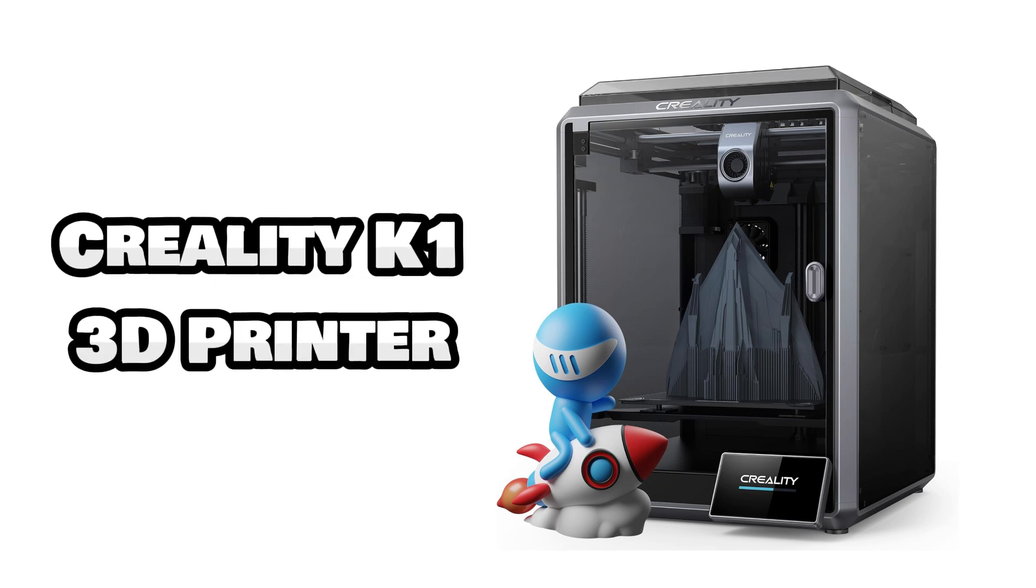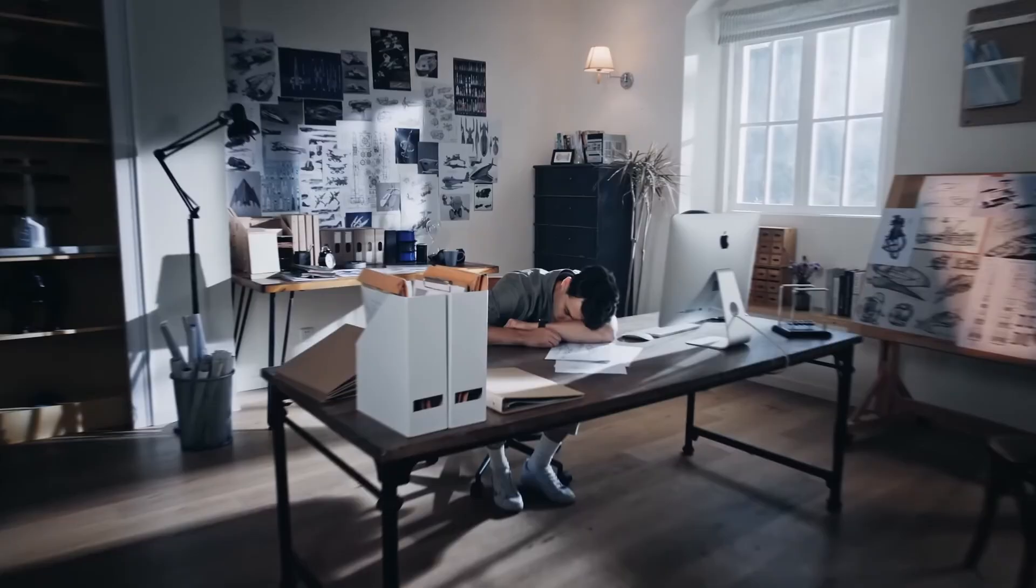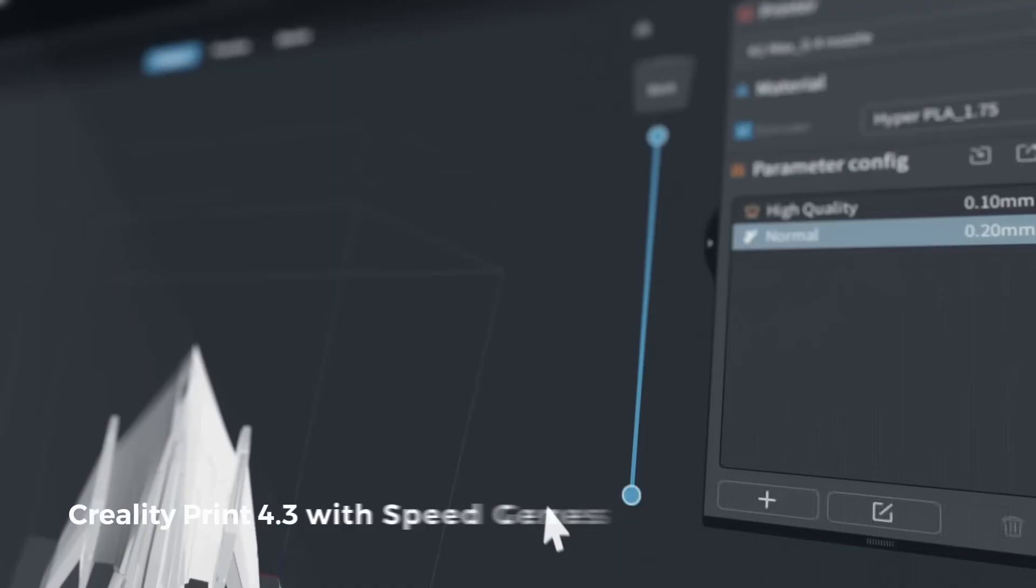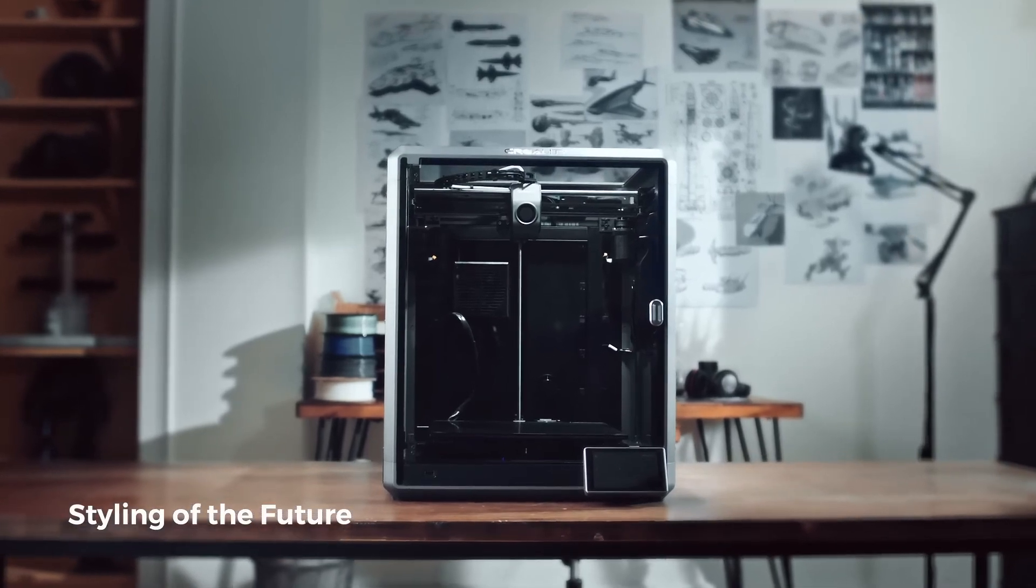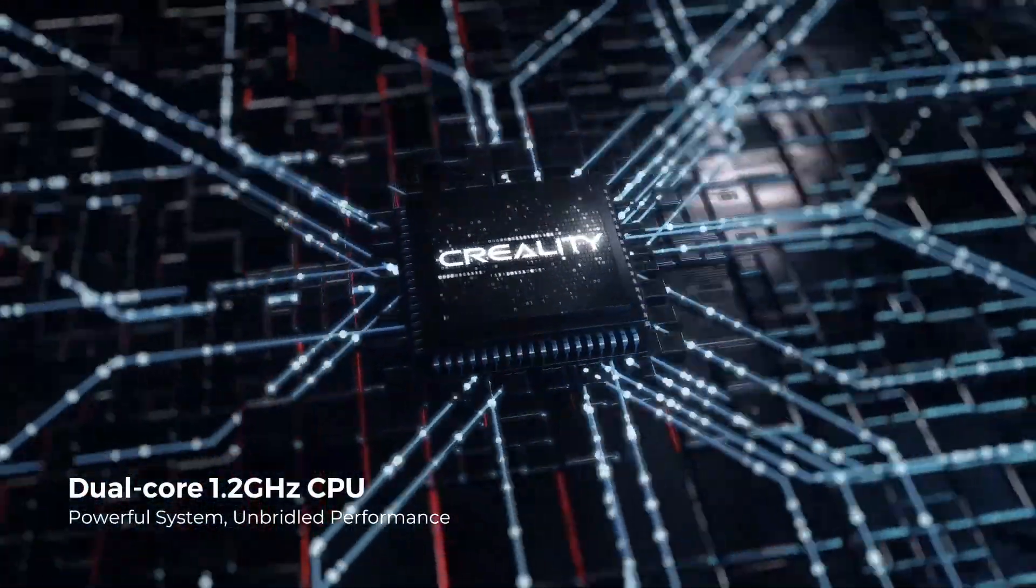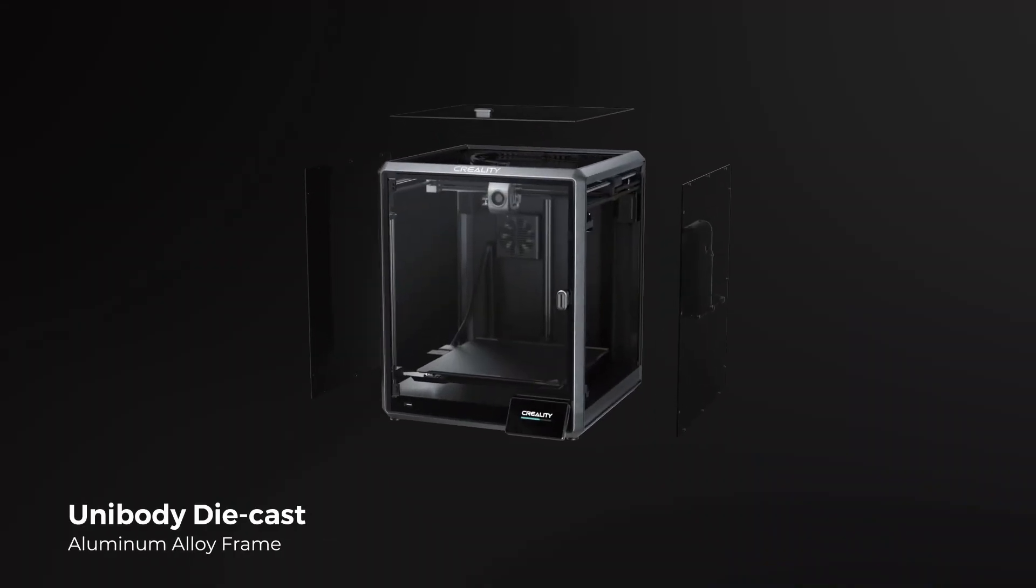Number 4, Creality K1 3D printer is designed for rapid, high-quality 3D printing. With an impressive upgrade of 600mm per second speed and 20,000mm per second squared acceleration, this 3D printer is 12 times faster than standard models, ensuring quick and efficient results for your projects.